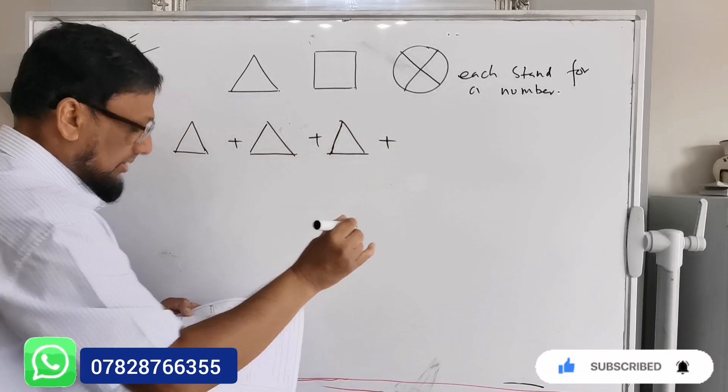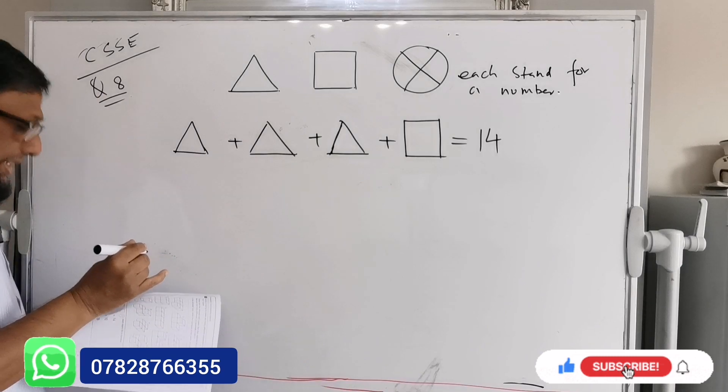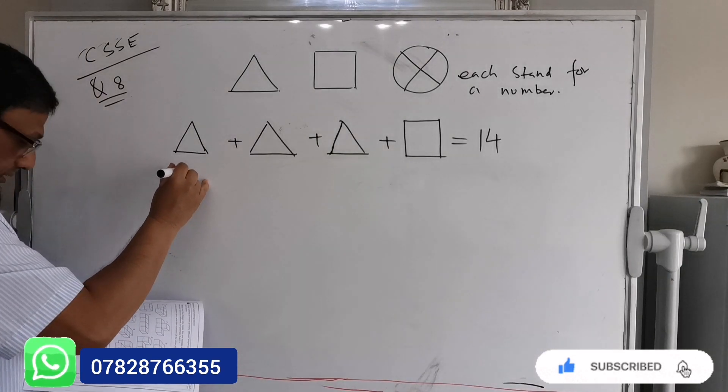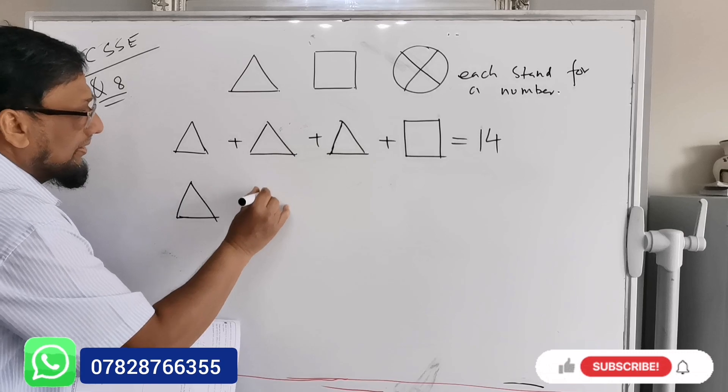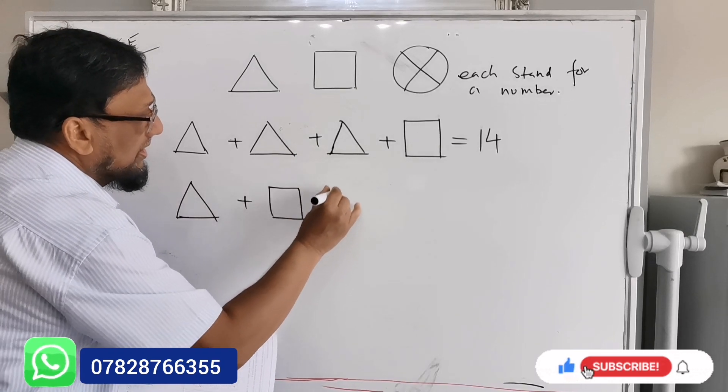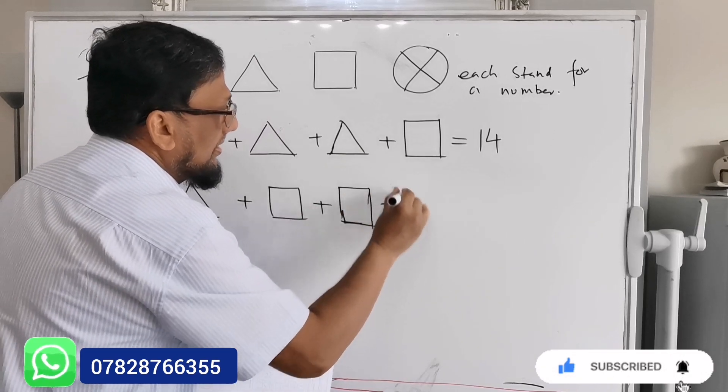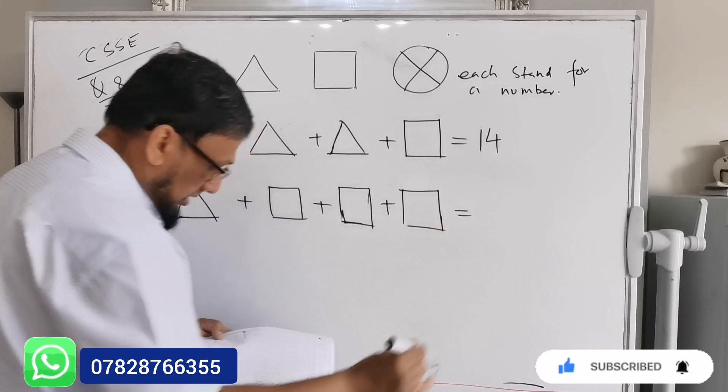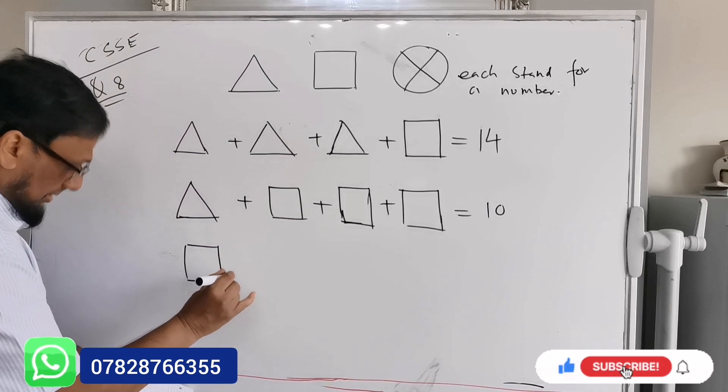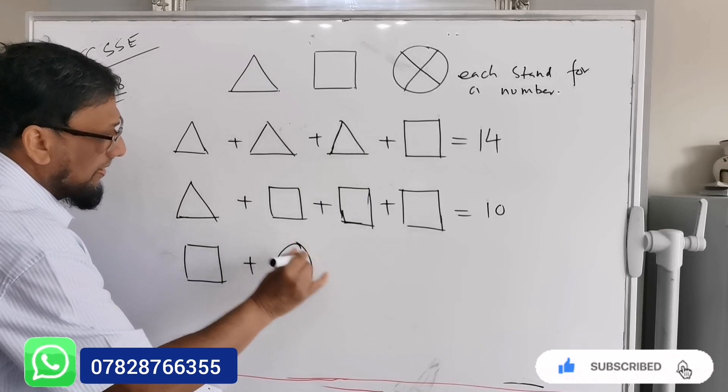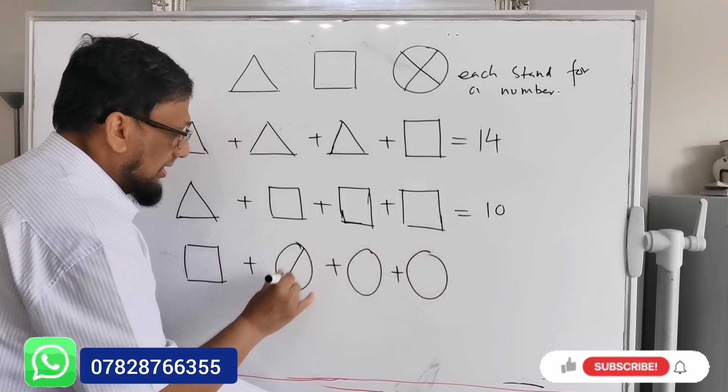Triangle plus square equals 14. And the second one is triangle plus square plus square plus square equals 10. And the last one is square plus this circle plus this one plus this one.